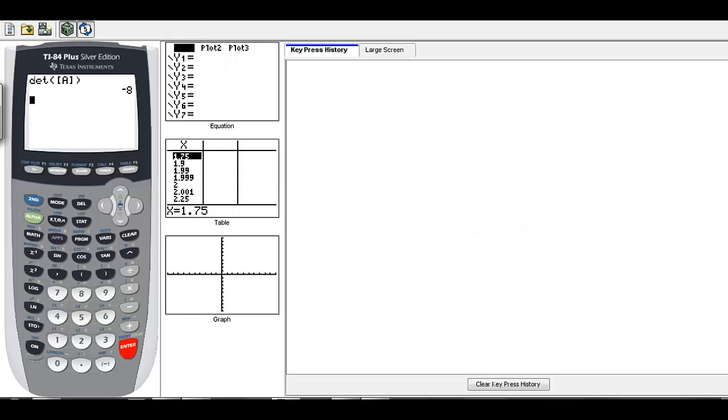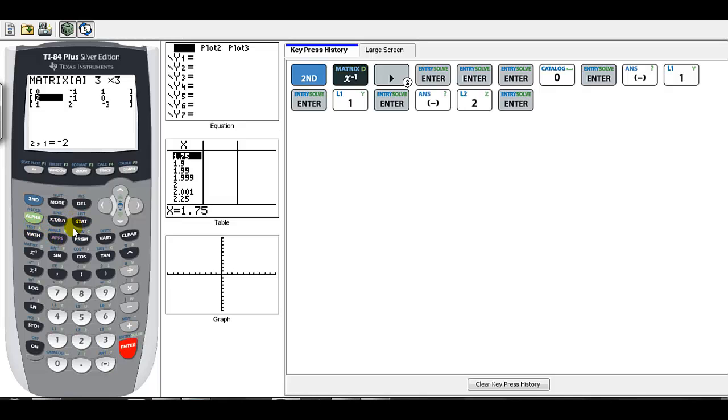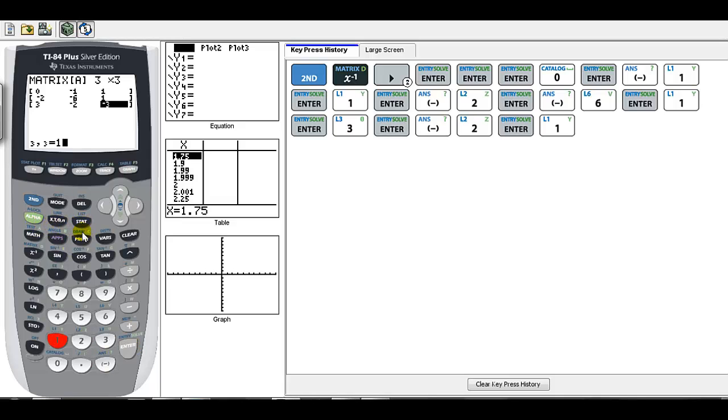For our surveying problem: second matrix, edit A, it's a 3 by 3. Put in the numbers - we had 0, negative 1, 1. You can type over those previous numbers. I hope you're doing this along with me so you're used to the buttons you're pressing. Do a quick check - that's right.